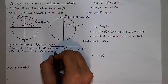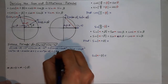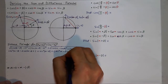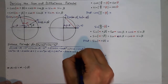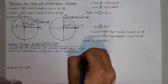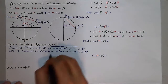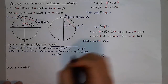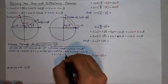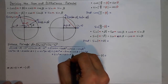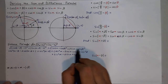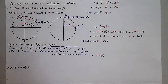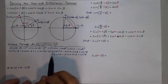On the right side, squaring gives cosine squared of alpha minus 2 cosine alpha cosine beta plus cosine squared of beta, and then plus sine squared of alpha minus 2 sine alpha sine beta — again following the perfect square trinomial pattern, multiplying those together and doubling — plus sine squared of beta. So we have a lot of terms here but some patterns start to occur.